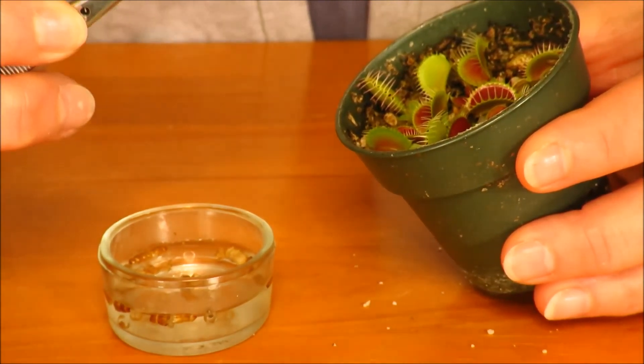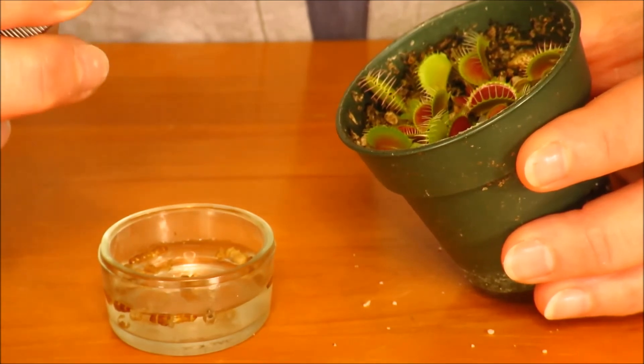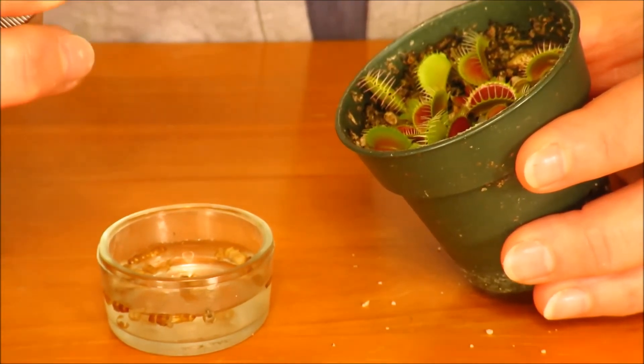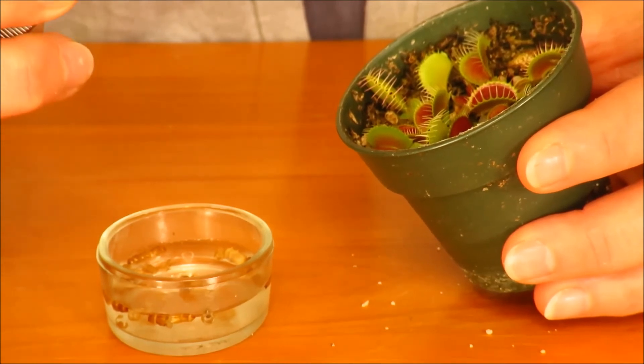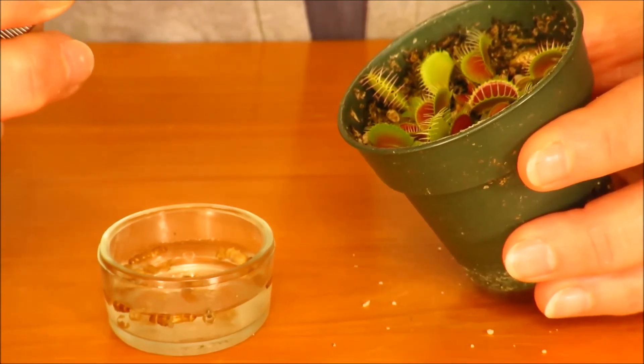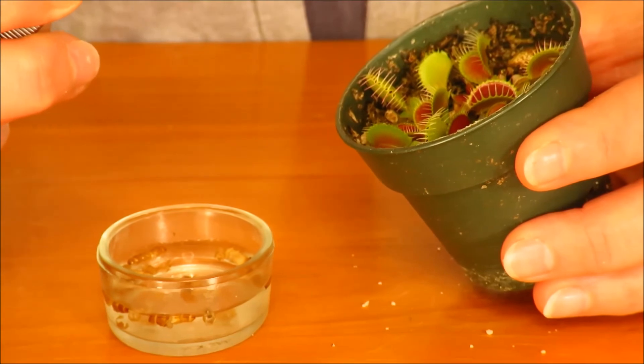The enzymes that these plants make actually are adapted to digesting insects. So they make chitinase, which will break down the exoskeleton of the insects. Of course, that doesn't do anything for ground beef. So don't do that.